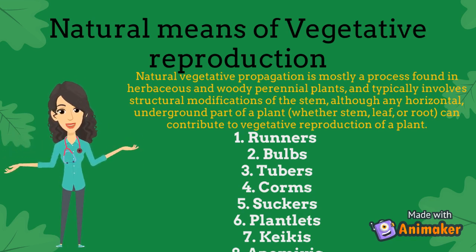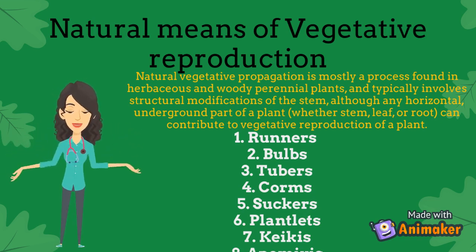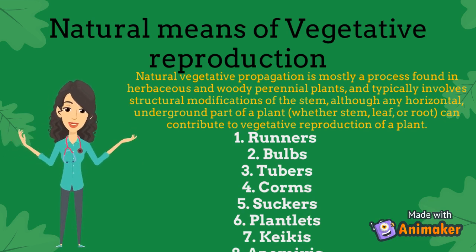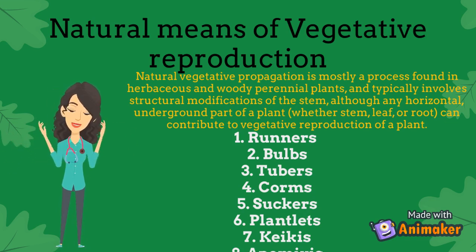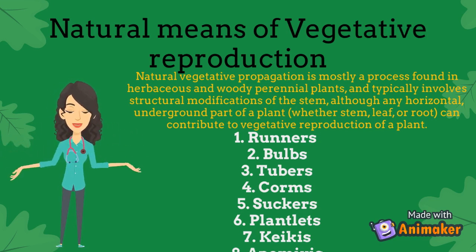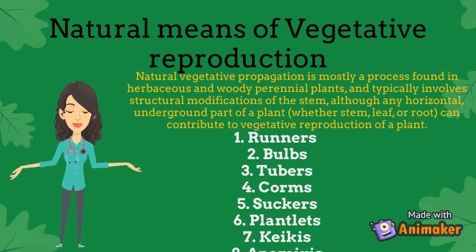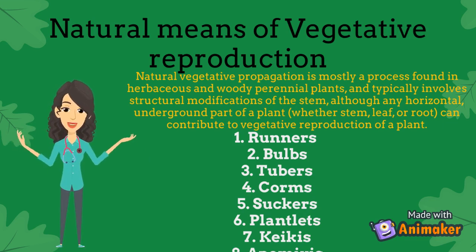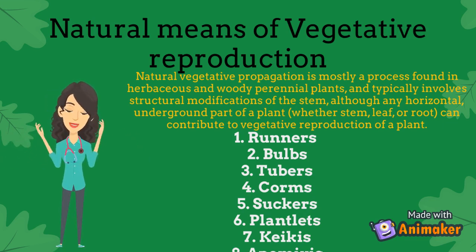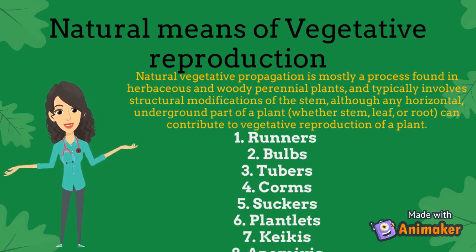Runners, also known as stolons, are modified stems that, unlike rhizomes, grow from existing stems just below the soil surface. As they are propagated, the buds on the modified stems produce roots and stems. Those buds are more separated than the ones found on the rhizome. Examples of plants that use runners are strawberries and currants.